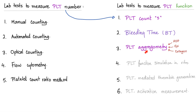What is platelet aggregometry? Literally, you are trying to induce and stimulate platelet aggregation and measure it. How do you stimulate and induce platelet aggregation? You add a platelet aggregation agonist. You have many options: ADP, epinephrine, collagen, ristocetin, and the famous arachidonic acid.